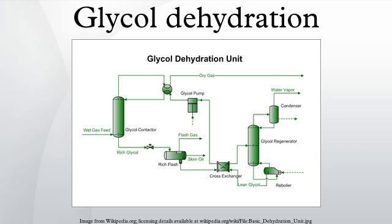The lean solvent is cooled again with a trim cooler before being fed back into the absorber. This trim cooler can either be a cross exchanger with the dry gas leaving the absorber or an air-cooled exchanger.